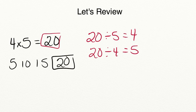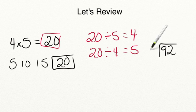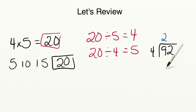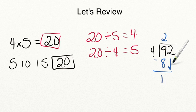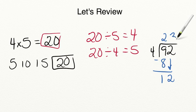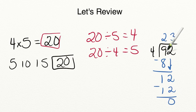Lastly, we discussed using long division if you can't skip count to a number or remember the multiplication or division fact. For example, 92 divided by 4. We see how many times 4 can go into 9 — 4 can go into 9 two times. 4 times 2 equals 8; subtract, 9 minus 8 equals 1, then drop down the 2. Repeat the process: 4 can go into 12 three times. 4 times 3 equals 12, zeroing out the equation. So 92 divided by 4 equals 23, and we could also say 23 times 4 equals 92.